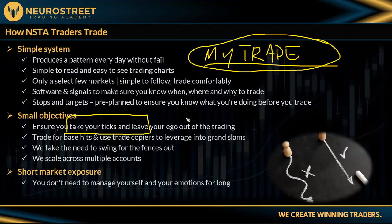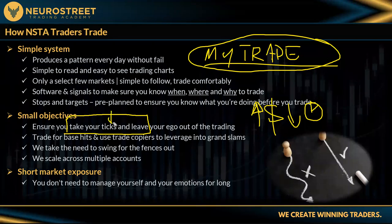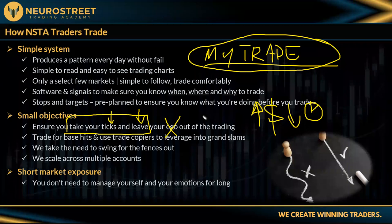Small objectives — take your ticks and leave. That's our goal every day. We got into trading because we wanted more money in less time. Ego doesn't matter while you're trading. Save the ego for dinner with your family when you're taking them on a killer vacation with all that trading money. Until then, take your trade, take your ticks, and leave.